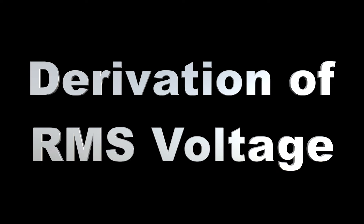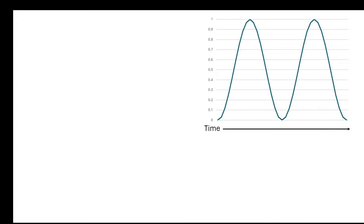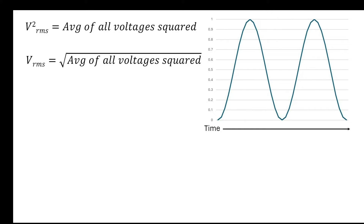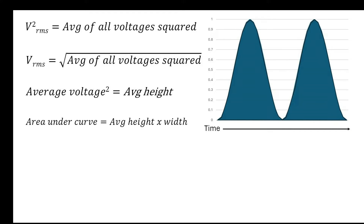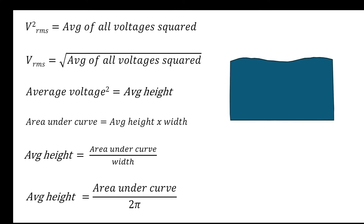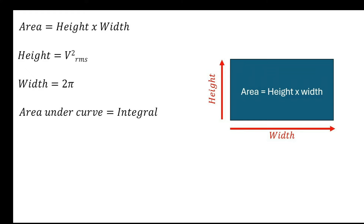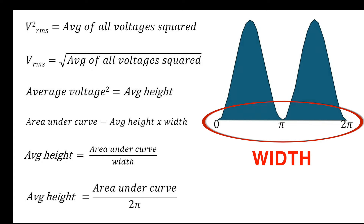Now if you want to see the derivation of RMS voltage, let's get into that. Going back to the graph showing the curve of voltage squared: if we can find the average of all the voltages along that curve, that gives us RMS voltage squared. Taking the square root of that average gives us RMS voltage. The average voltage squared is the average height of that curve. Using calculus, we calculate the area under the curve, which equals the average height times the width — just like the area of a rectangle. The width of this curve is 2π, because we're doing one full cycle through the sine wave.